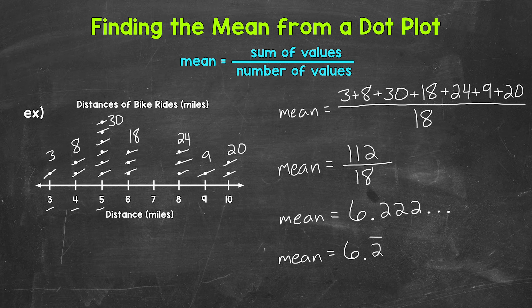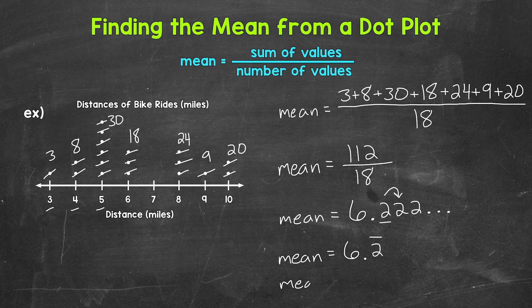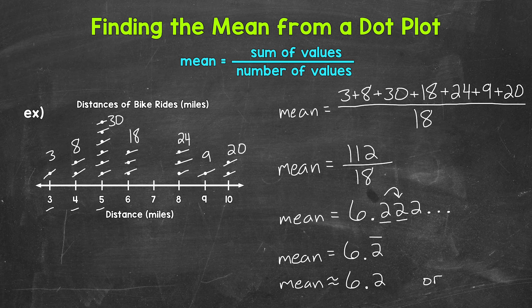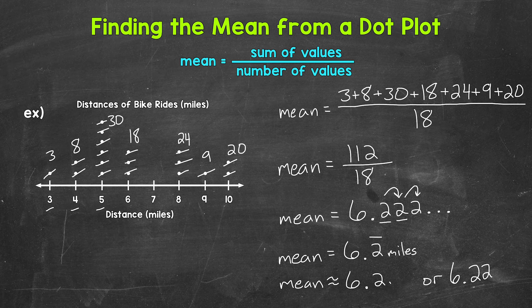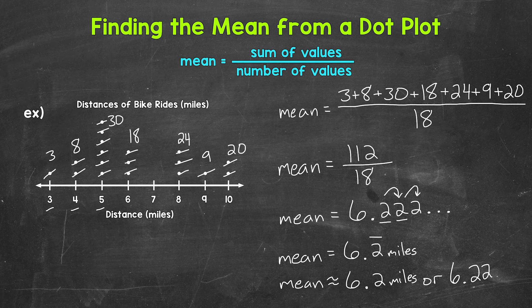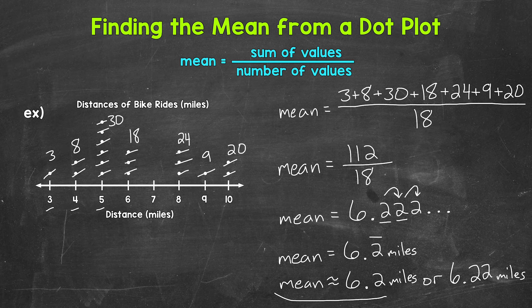So let's round to both the tenths and hundredths place for a couple of different options here. So if we round to the tenths, well, we have a 2 in the tenths place with a 2 to the right. So the mean will round to 6 and 2 tenths when we round to the tenths place, or let's round to the hundredths place as well. We have a 2 in the hundredths place with a 2 to the right. So this rounds to 6 and 22 hundredths. Now we are working with miles here. So I'm going to label all of these and we are done.